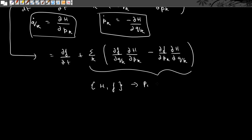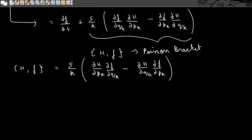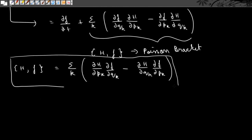So this is called the Poisson bracket. The Poisson bracket of the Hamiltonian and the function is defined as summation over K: ∂H/∂P_K times ∂F/∂Q_K minus ∂H/∂Q_K times ∂F/∂P_K. To remember this easily, you first partially differentiate H with respect to P_K and then F with Q_K, and subtract it with the same thing but differentiating H with Q_K and F with P_K.